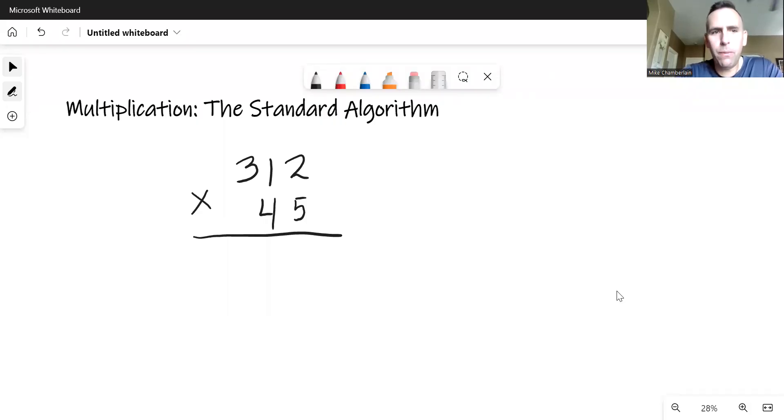Let's take a look at the standard algorithm for multiplication. I'm sure many of you are familiar with this, but let's just refresh our memory. Here I have the number 312 times 45. We're not in a different base, just base 10.